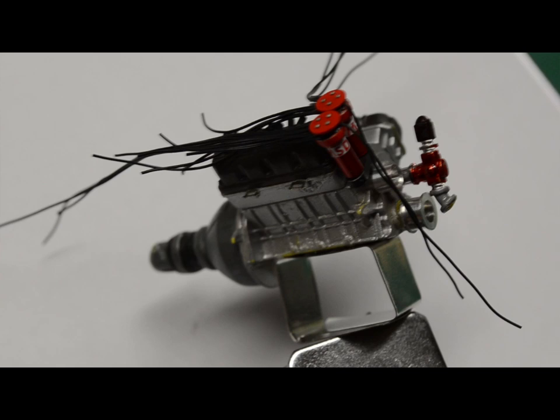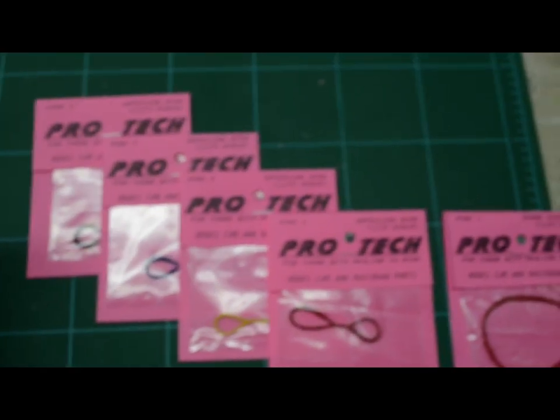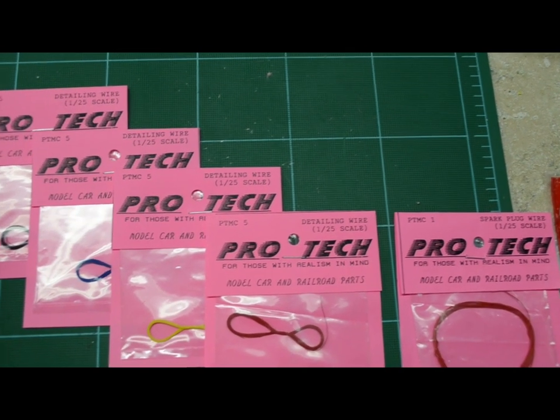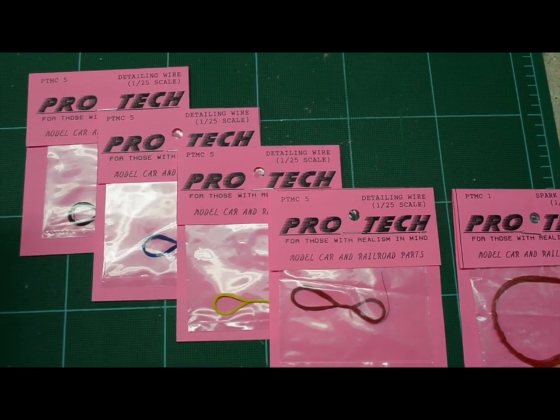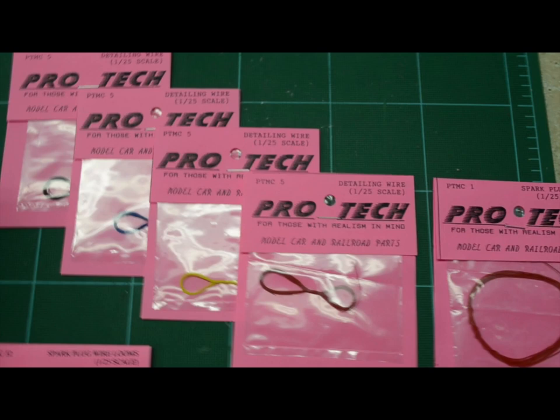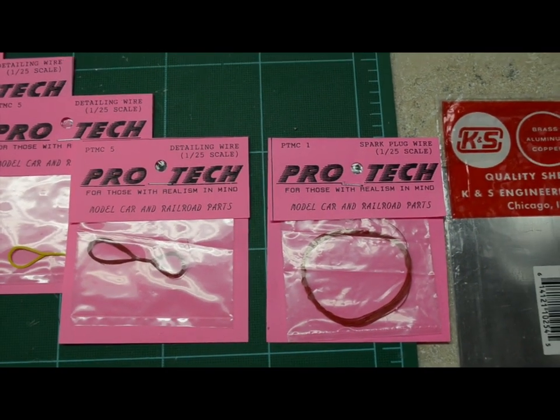Now you can see I've got these two mags that I made previously just sitting in place here, and I'm ready to start running those spark plug wires. The parts we're going to be using for this, more of the Pro-Tech items, we've got their item PTMC5 in various colors of detailing wire, and I'm going to use a different color spark plug cable this time, that's PTMC1.